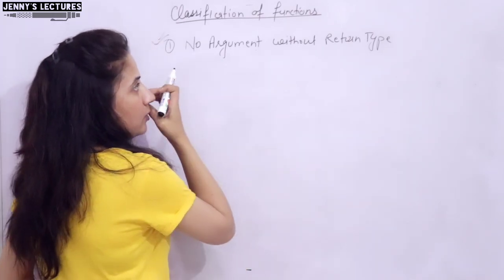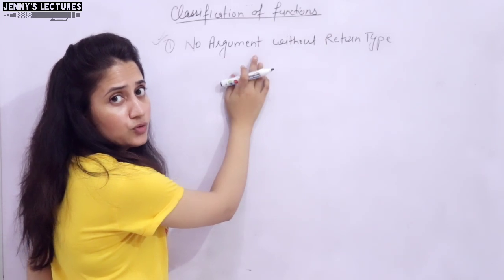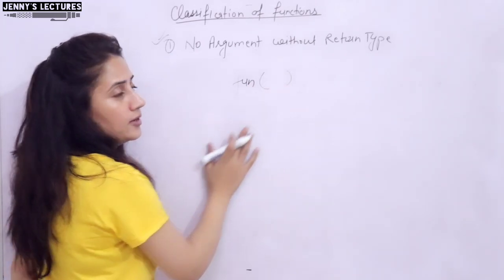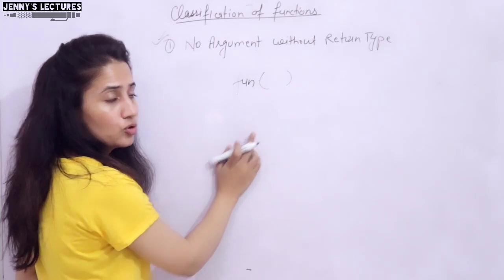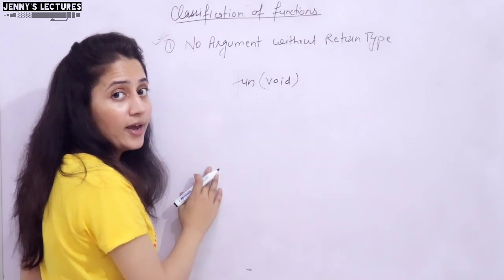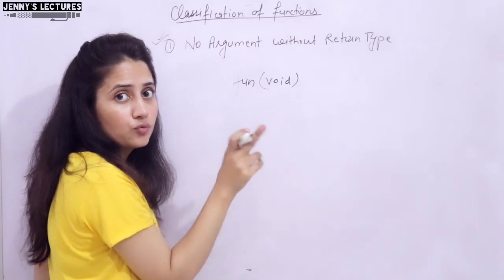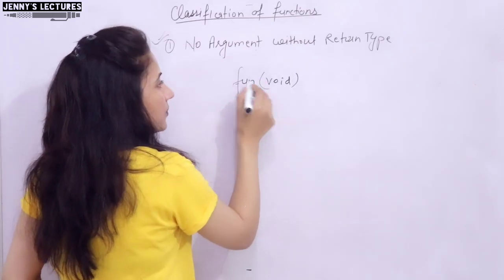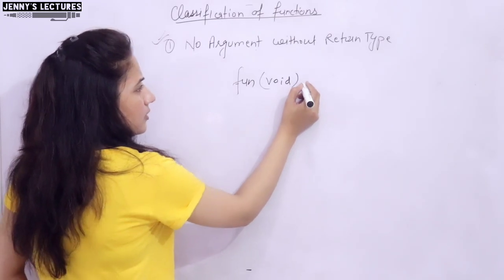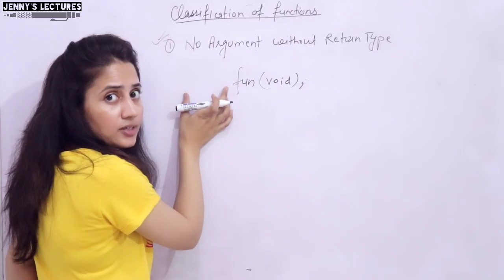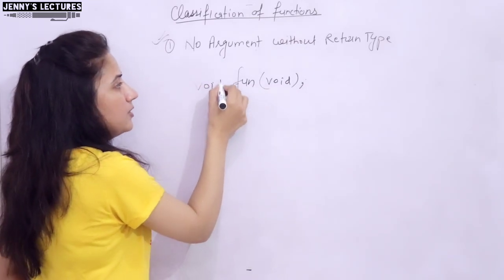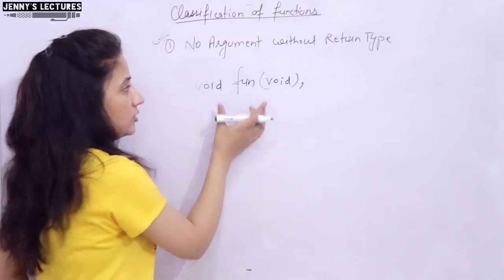The general syntax for a function in this category is: function name, for example 'fun', with no argument — meaning we are not going to pass any argument, so the bracket is empty. Better to use the keyword void in the bracket rather than leaving it blank, as we discussed in the introduction to functions video. For the return type, since this function has no return type, we write void. This is the simple declaration of the function, ending with a semicolon.